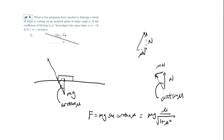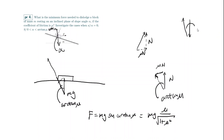For part (b), 0 < α < arctan μ, it's the same approach. The combined reaction force still points at arctan(μ) from the normal to the incline, i.e., arctan(μ) from the vertical. The gravitational force mg points straight down. The angle between the reaction direction and mg is arctan(μ) − α.